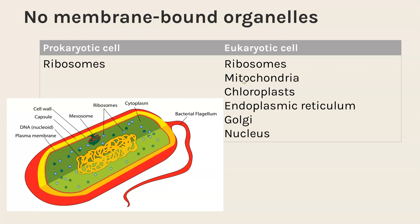Some examples of membrane-bound organelles found in eukaryotic cells are: mitochondria, chloroplasts, endoplasmic reticulum, Golgi apparatus or body, and the nucleus. Because all of those are membrane-bound, you do not find them in prokaryotic cells.